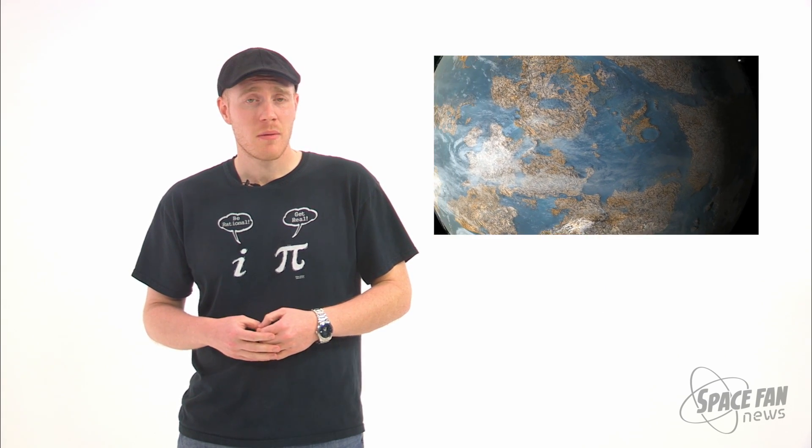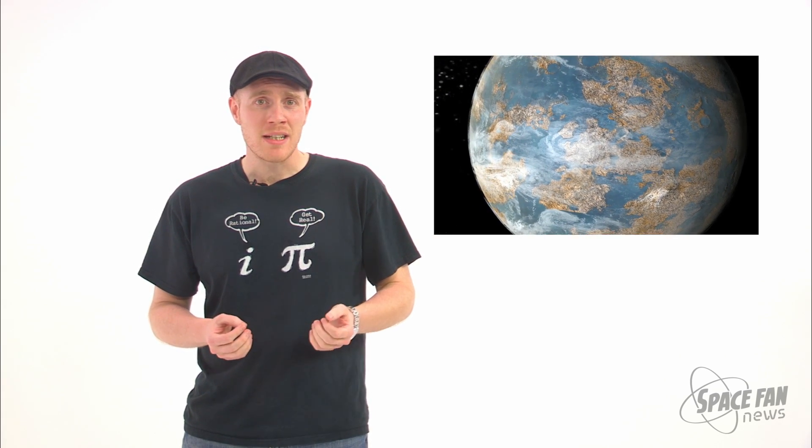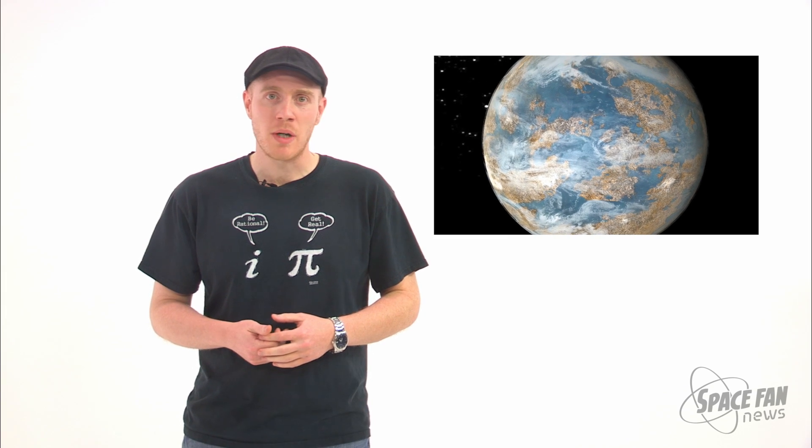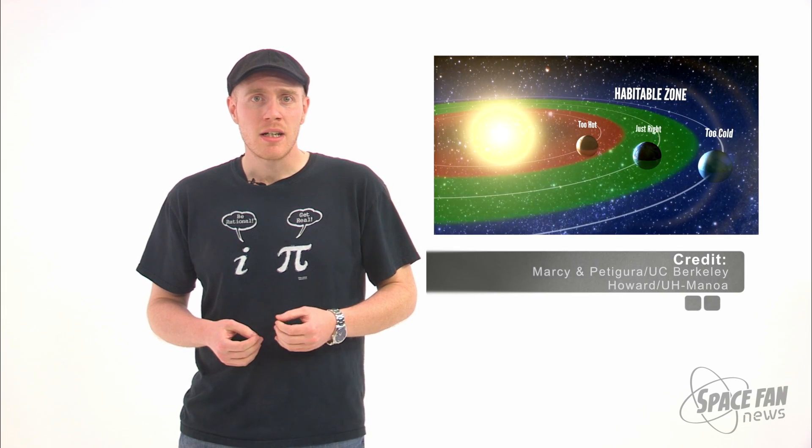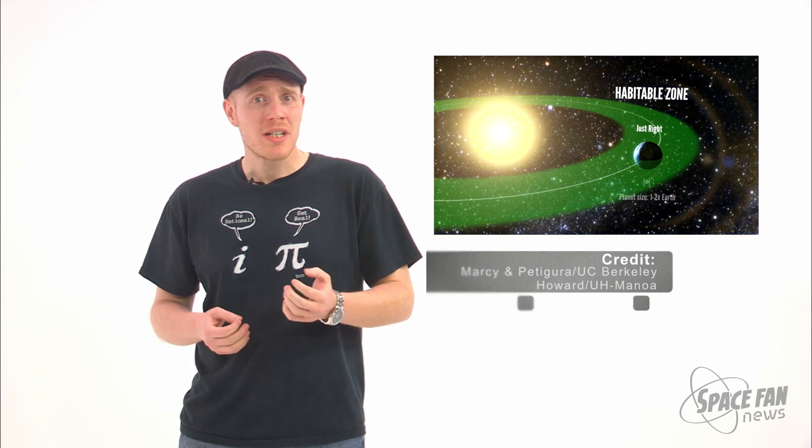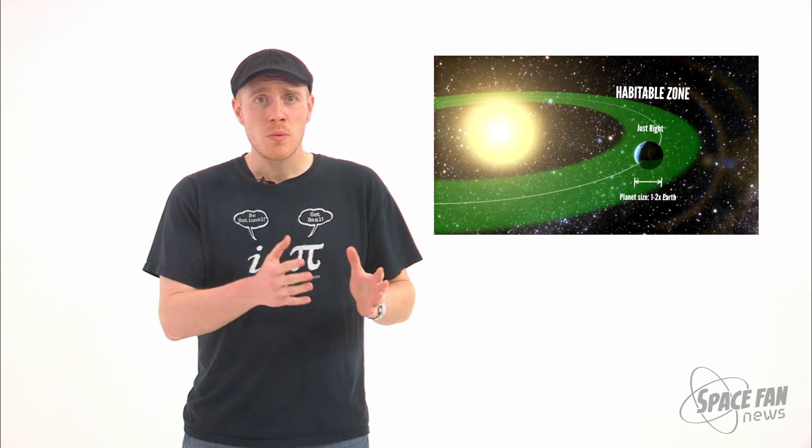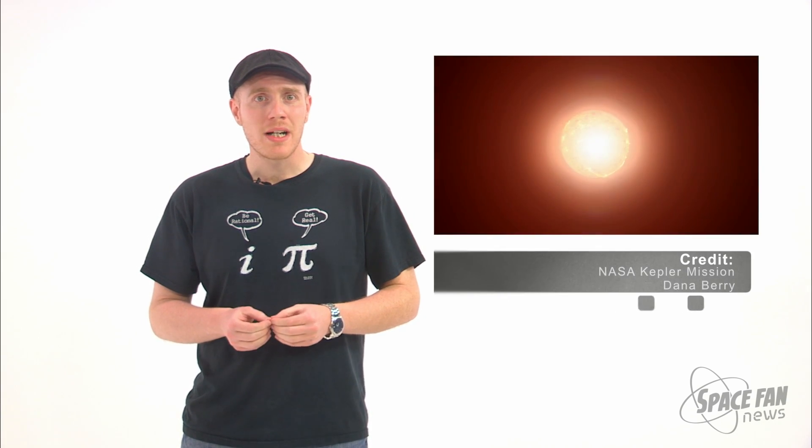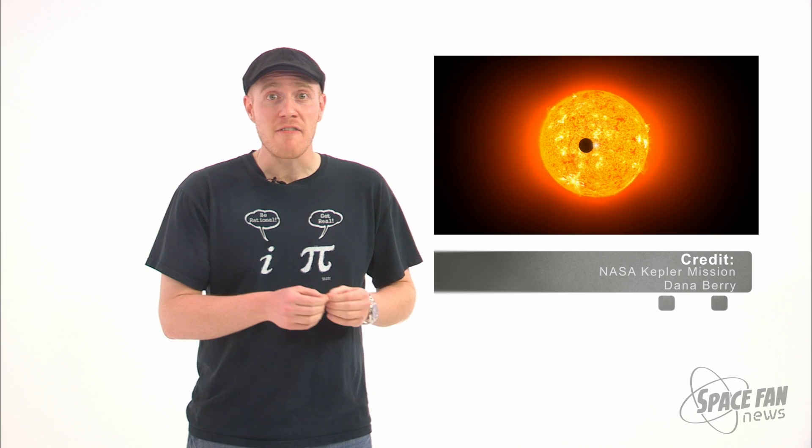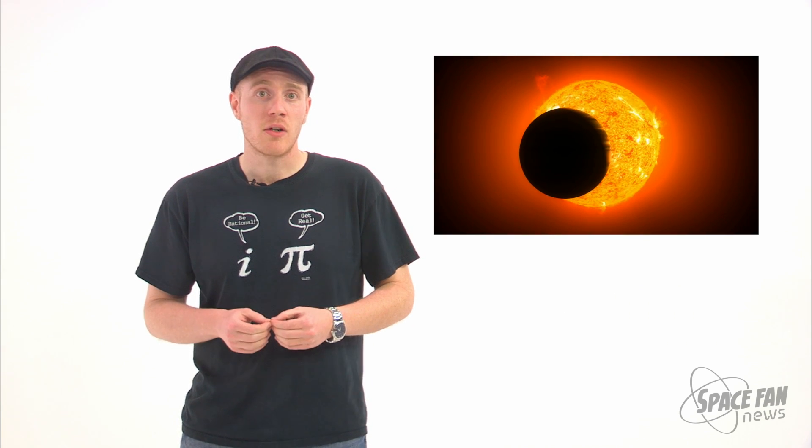Well first of all, let's define what Earth-like means. Earth-like does not mean that it's a gorgeous blue marble floating around the star. Instead, it means that its diameter is anywhere between one and two times that of Earth, with its orbit allowing between one quarter and four times the amount of light that Earth receives.